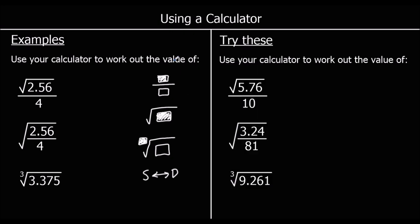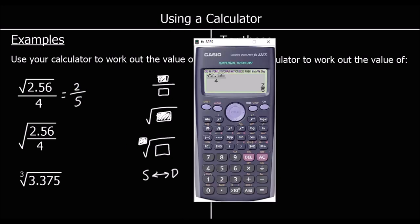We could write 2 fifths for this answer. Or if we want it as a decimal, press the S to D button and it's 0.4. The S to D button converts it from a fraction to a decimal.